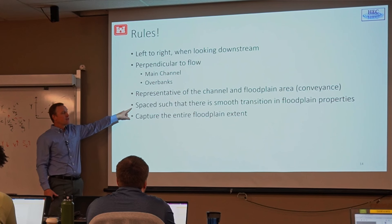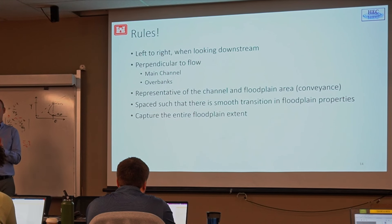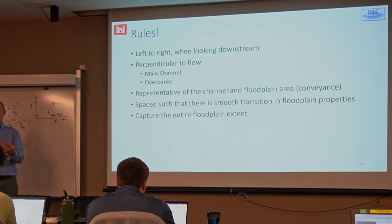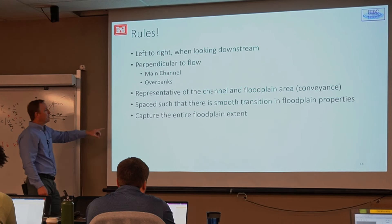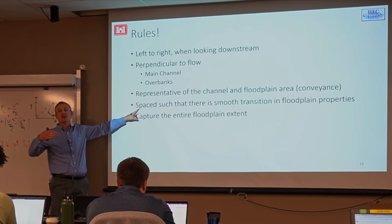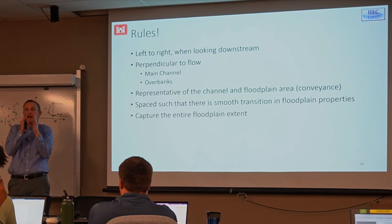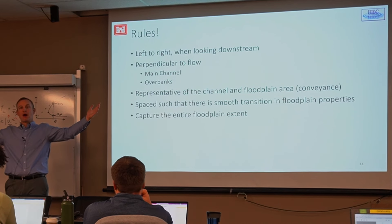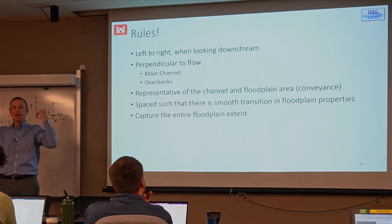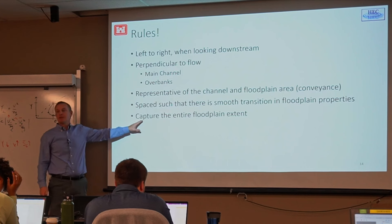Space cross sections so there's a smooth transition in floodplain properties. We're solving mathematical equations that average information from one cross section to the next, so the data must reflect gradual changes in terrain. Don't have a cross section far upstream where the channel's really narrow and the next one far downstream where it's wide — capture that expansion. And always capture the entire floodplain extent.